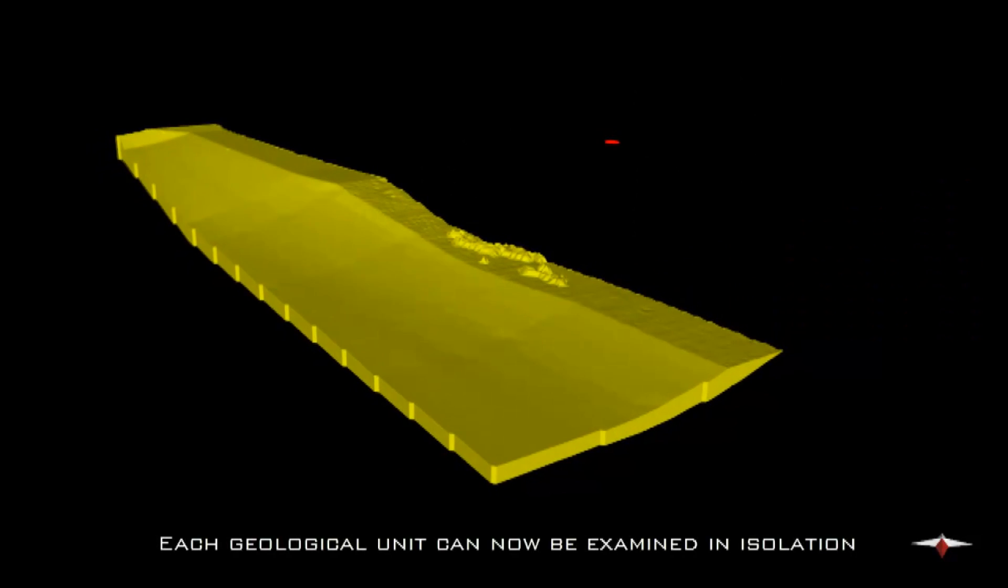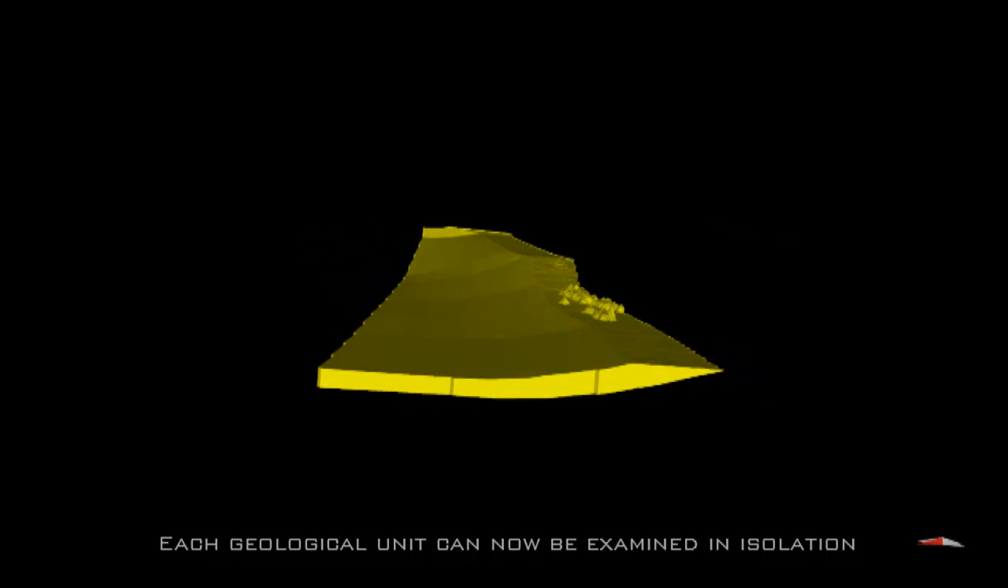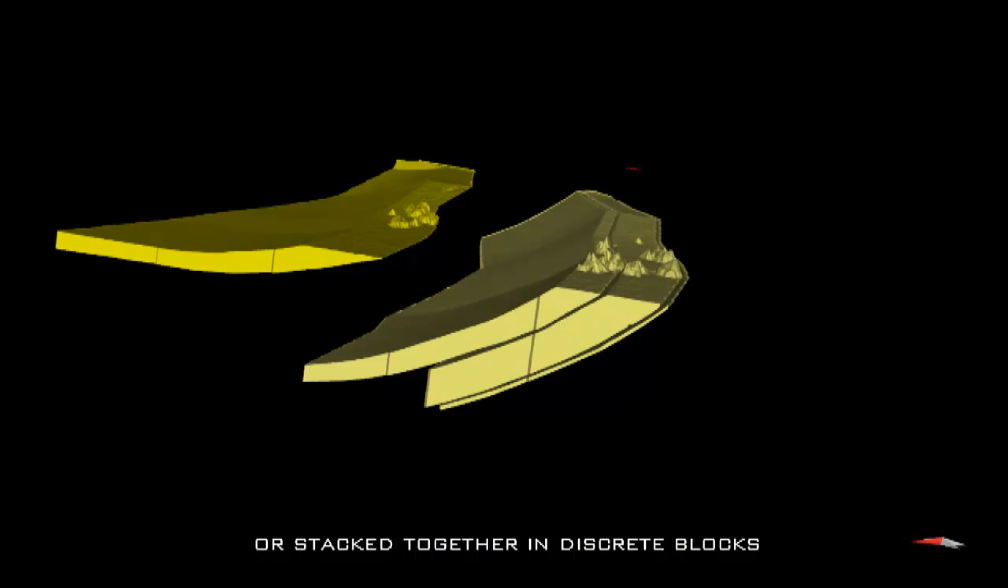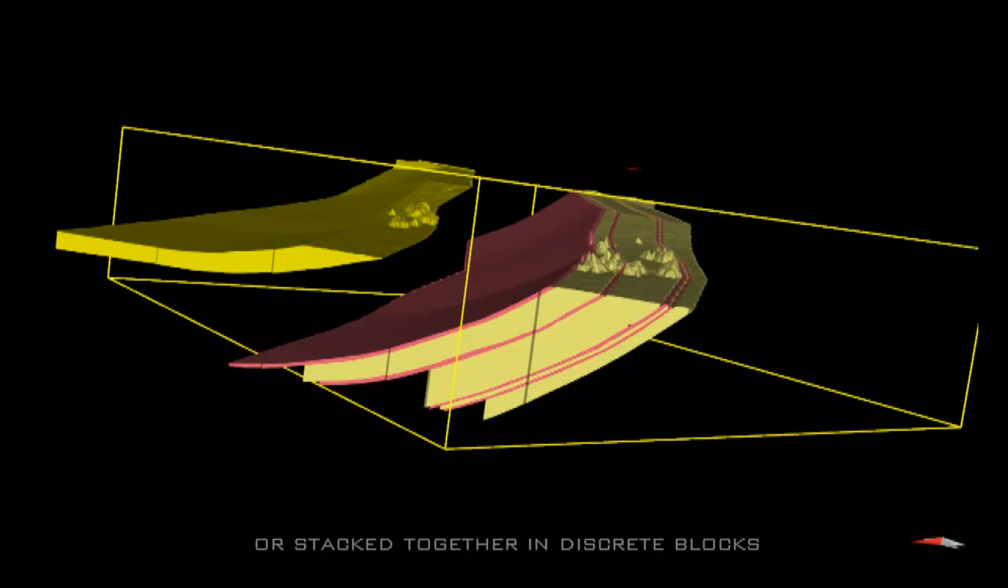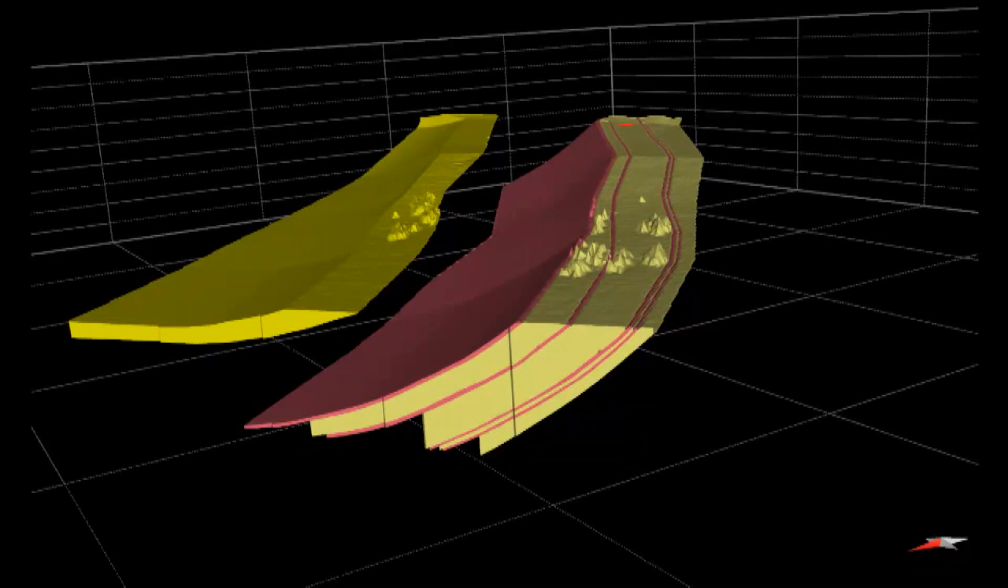Displaying each unit as a volume enables the viewer to isolate an individual unit and examine it in detail from any perspective. Conversely, it can display multiple unit volumes together to increase the viewer's understanding of the ground conditions in a particular section of the site.